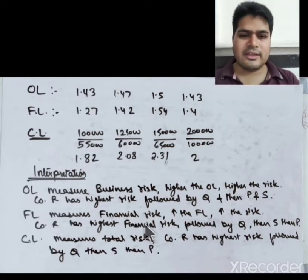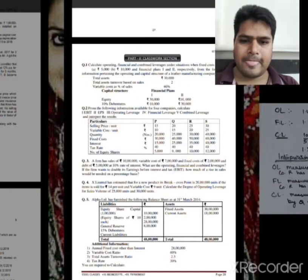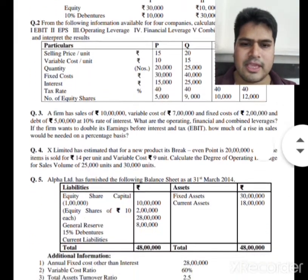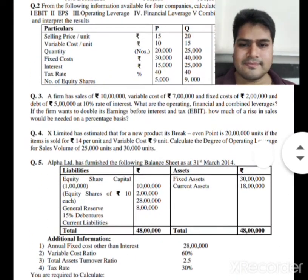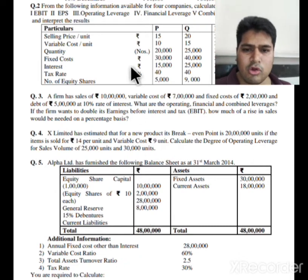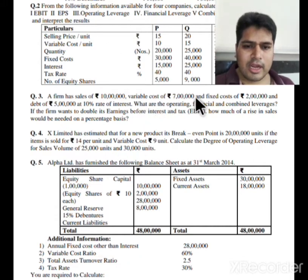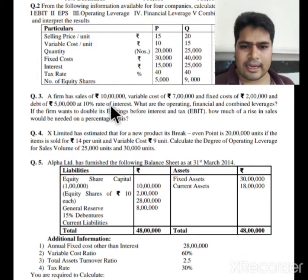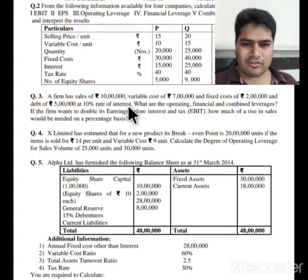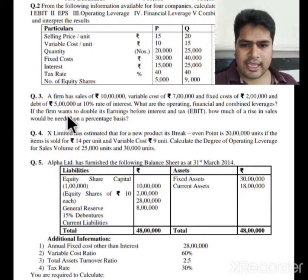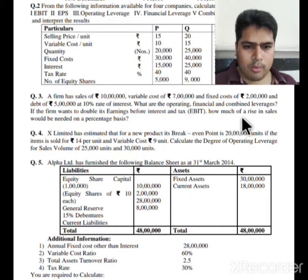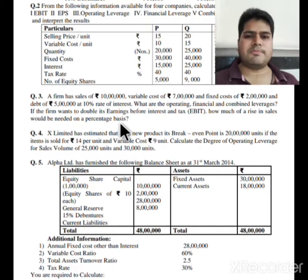Now let us move to question number 3. A firm has sales of 10 lakhs, variable cost 7 lakhs, fixed cost 2 lakhs, and debt of 5 lakhs at 10% interest rate. We need to find operating leverage, financial leverage, and combined leverage.